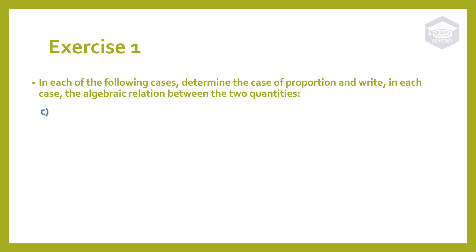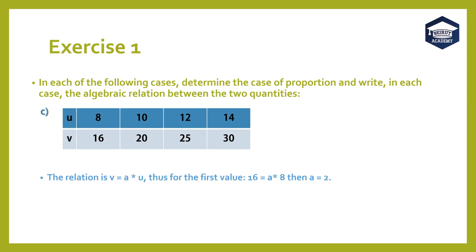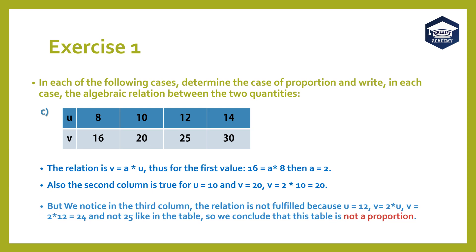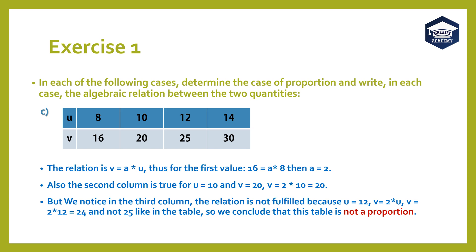Part C. The relation is v equals a times u. Thus for the first value, 16 equals a times 8, then a equals 2. The second column is also true for u equals 10 and v equals 20, since v equals 2 times 10 equals 20. However, in the third column the relation is not fulfilled because for u equals 12, v equals 2 times 12 equals 24, not 25 as in the table. So we conclude that this table is not a proportion.